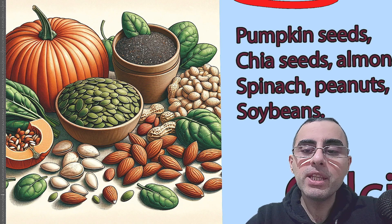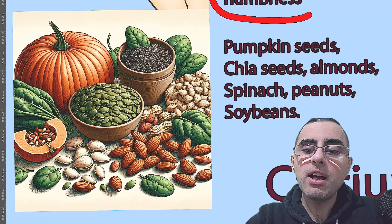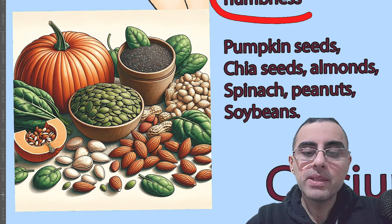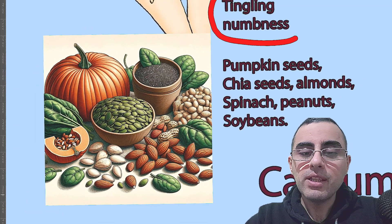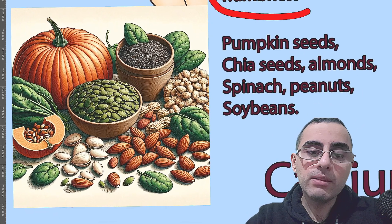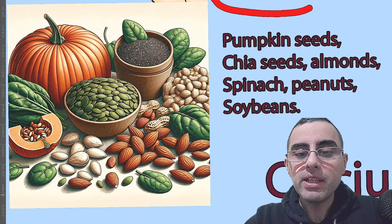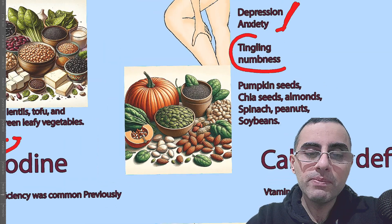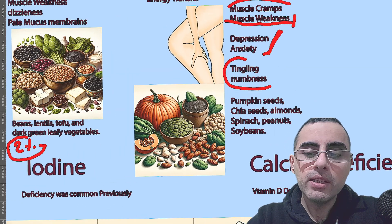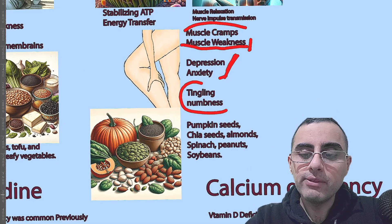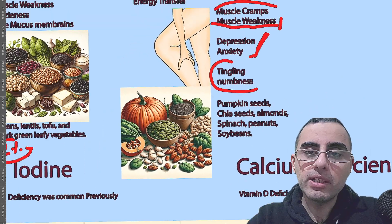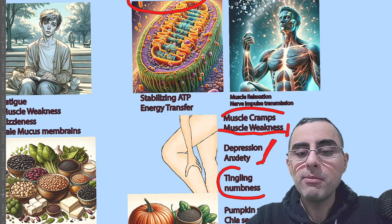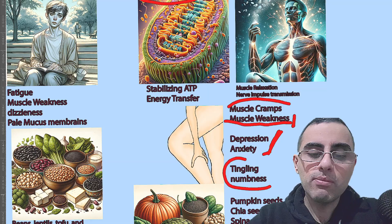Natural sources of magnesium that are high in this mineral include pumpkin seeds, chia seeds, almonds, peanuts, soybeans, and beans generally. These foods are high in magnesium and you should eat them actively, because magnesium deficiency is very common among the general population.